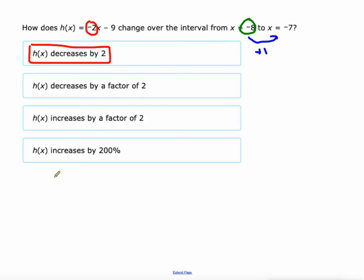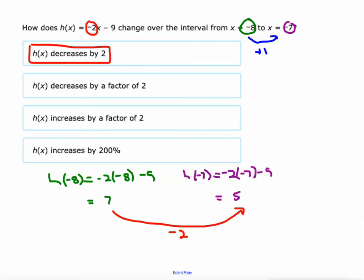If we put negative 8 in, h at negative 8 equals negative 2 times negative 8 minus 9, which is 16 minus 9, which is 7. And if we put negative 7 in here, h of negative 7, that would be negative 2 times negative 7 minus 9, which is 14 minus 9, which is 5. And I told you, it would be a decrease of 2. It is a decrease of 2.